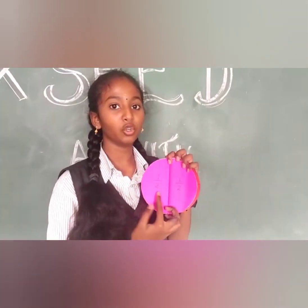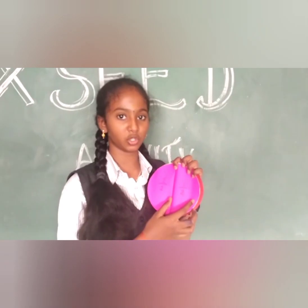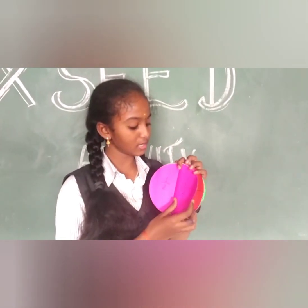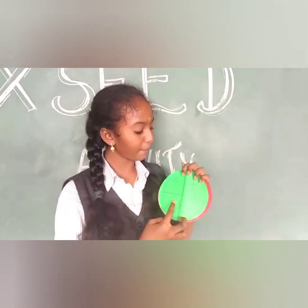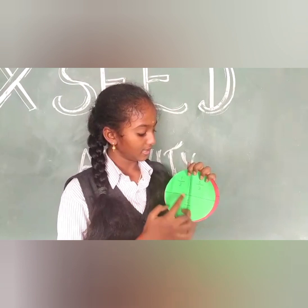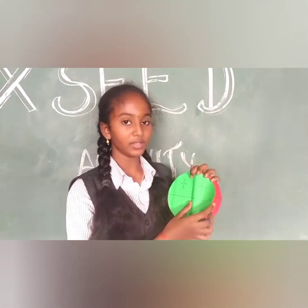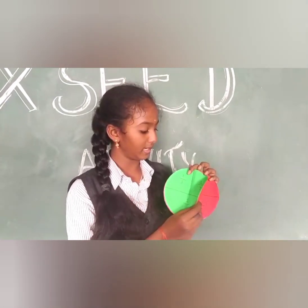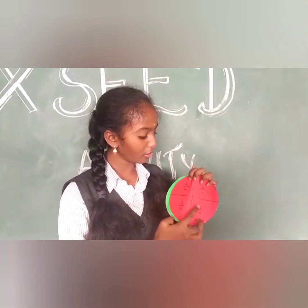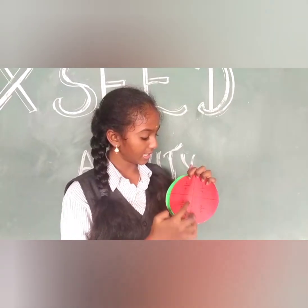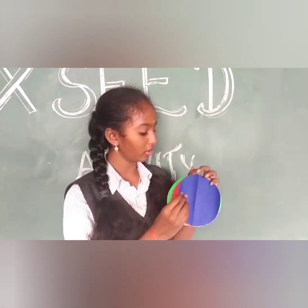There are 2 parts, the denominator is 2, so this is 1 by 2. There are 3 parts, the denominator is 3, so this is 1 by 3. There are 4 parts, the denominator is 4, so this is 1 by 4.